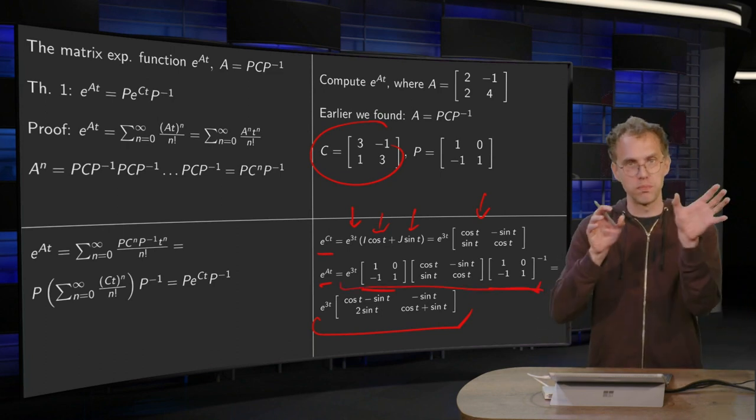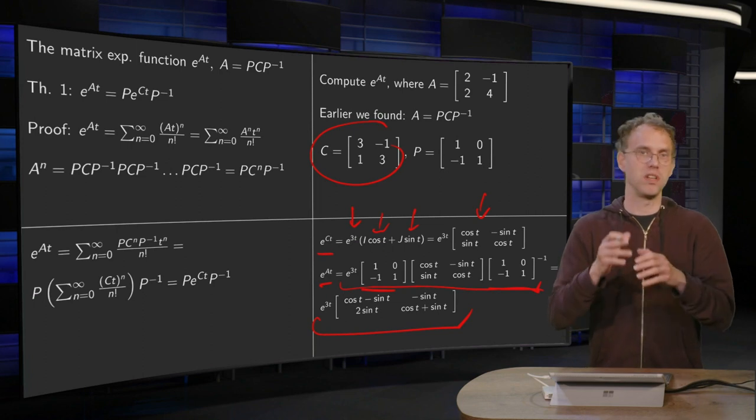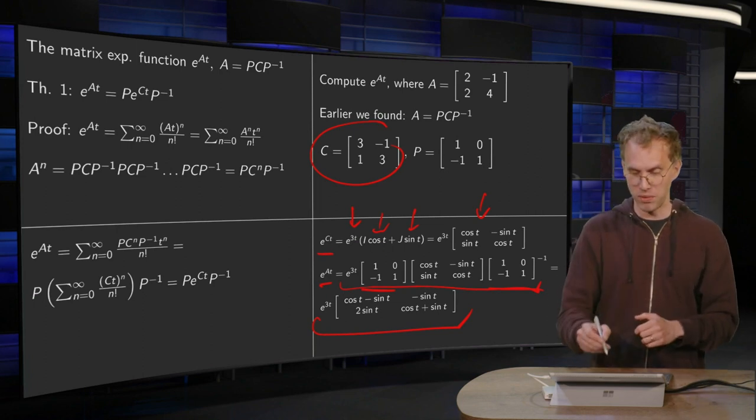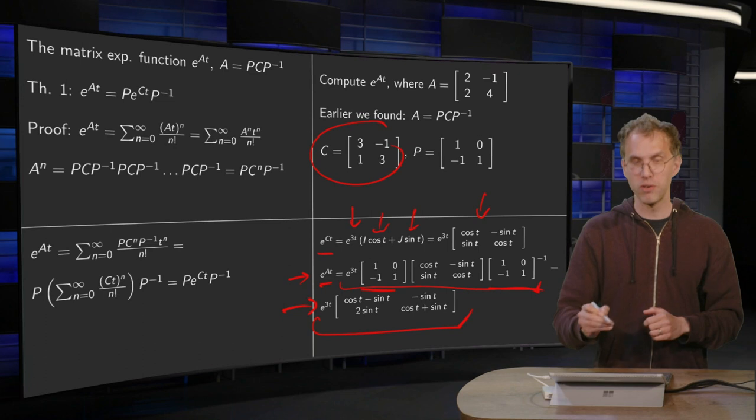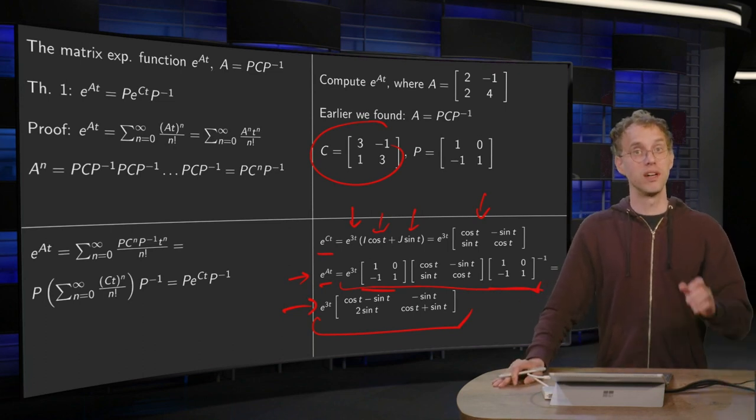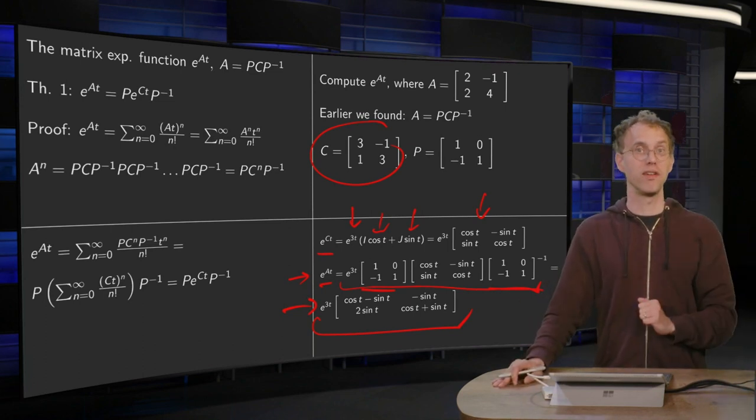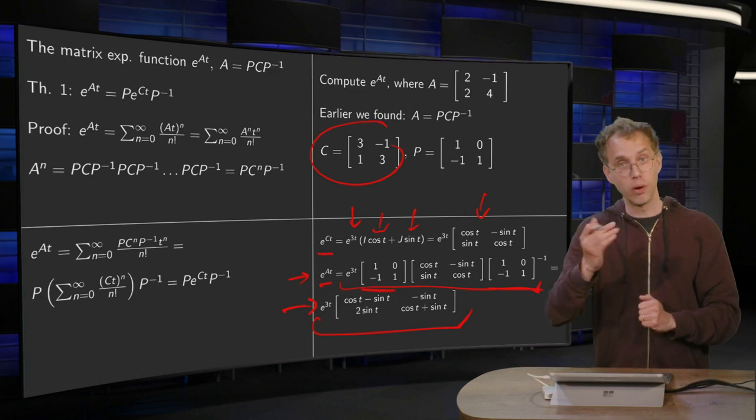This answer as product of three matrices is in a way a bit more insightful. Both of them are, of course, correct. So this is how you can compute your e to the power at if you have a 2 by 2 matrix A with complex eigenvalues.